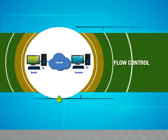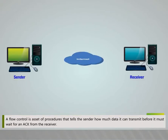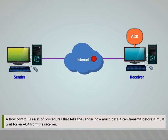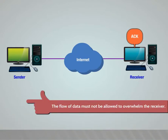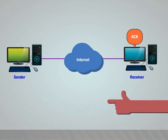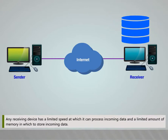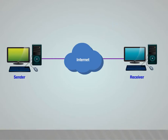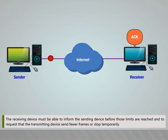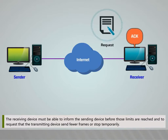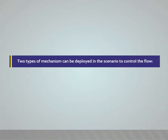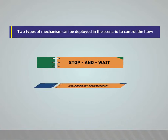Flow Control is a set of procedures that tells the sender how much data it can transmit before it must wait for an acknowledgement from the receiver. The flow of data must not overwhelm the receiver. Any receiving device has a limited speed for processing incoming data and limited memory to store it. The receiving device must inform the sending device before those limits are reached and request fewer frames or a temporary stop. Two types of mechanisms can control flow: Stop and Wait, and Sliding Window.